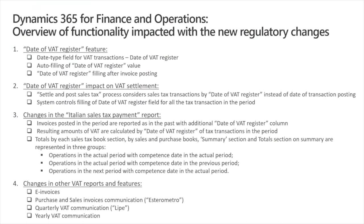First of all, these are sales and purchase invoices, free text invoices, and journals. The user will also be able to set up some auto fill-in rules so that the Date of VAT Register would be defined automatically and the user will not need to specify this date manually each time. If for some reason a VAT transaction was posted with an empty Date of VAT Register, it will also be possible to specify its value even after posting of the tax transaction. To activate this new field through the system, specific feature management was introduced and must be actively activated.